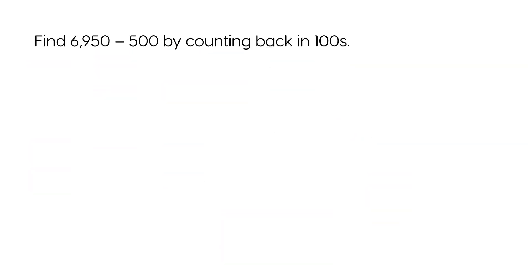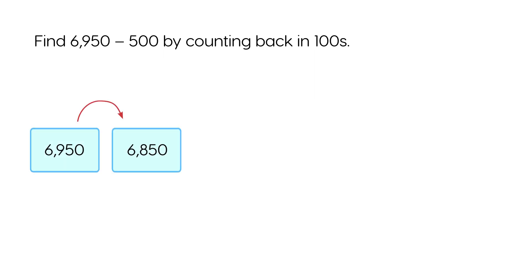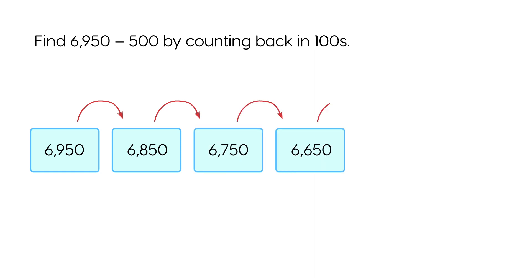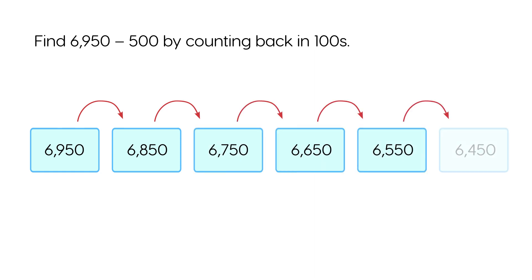Find six thousand nine hundred fifty minus five hundred by counting back in one hundreds. Six thousand nine hundred fifty minus five hundred equals six thousand four hundred fifty.